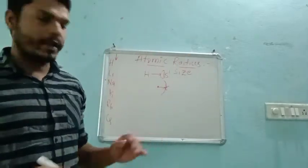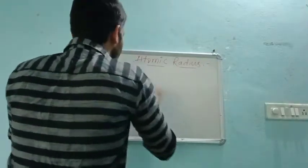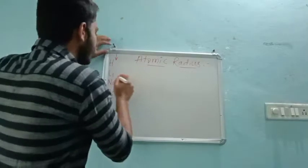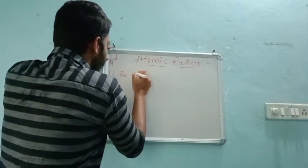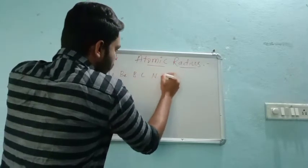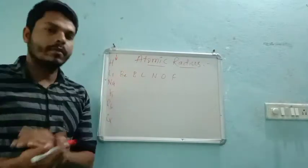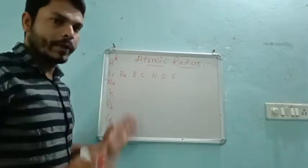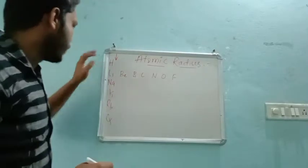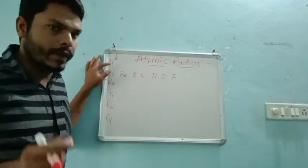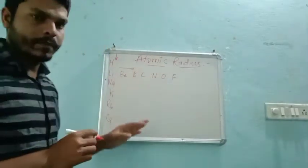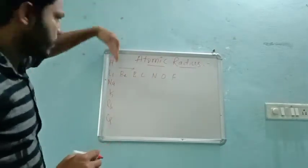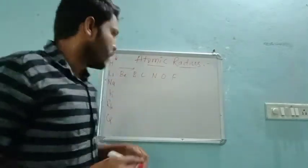We already know what groups and periods are. If we move from top to bottom in the periodic table, we call that a group. If we move from left to right in the periodic table, that is called a period. For example, lithium, beryllium, boron, carbon, nitrogen, oxygen, and so on. In the whole periodic table, I am taking one group and one period for explanation.